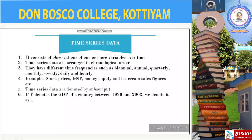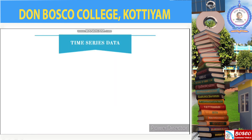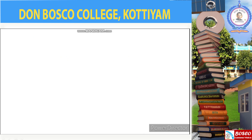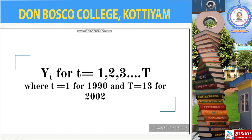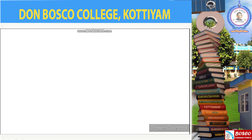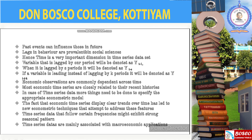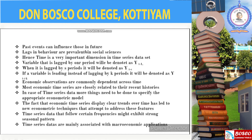Time series data are denoted by the subscript t. For example, if y denotes the GDP of a country between 1990 and 2002, we denote that as y_t for t equal to 1, 2, 3, up to T, where small t equals 1 for 1990 and capital T equals 13 for 2002, because 1990 to 2002 is 13 years. Time is a very important dimension in time series data sets because past events can influence those in the future, and lags in behavior are prevalent in social sciences.